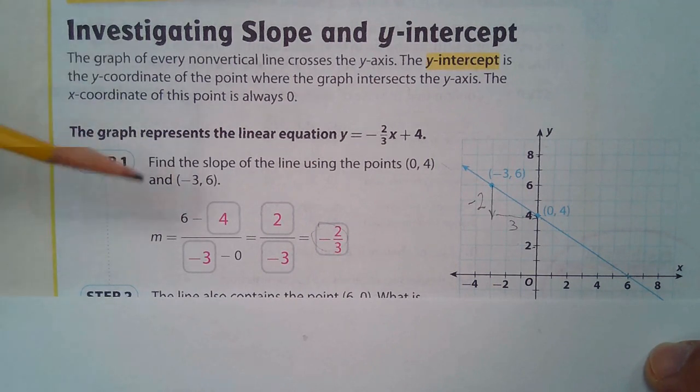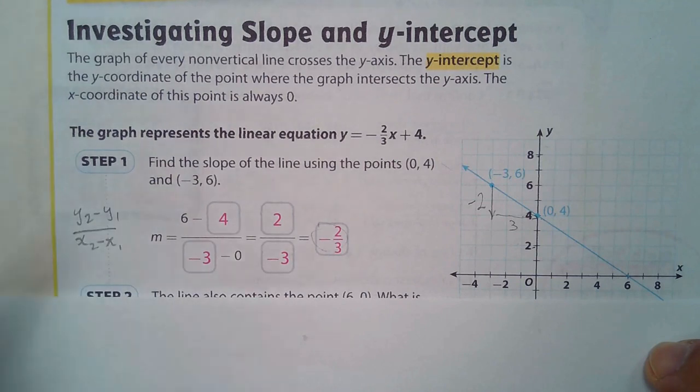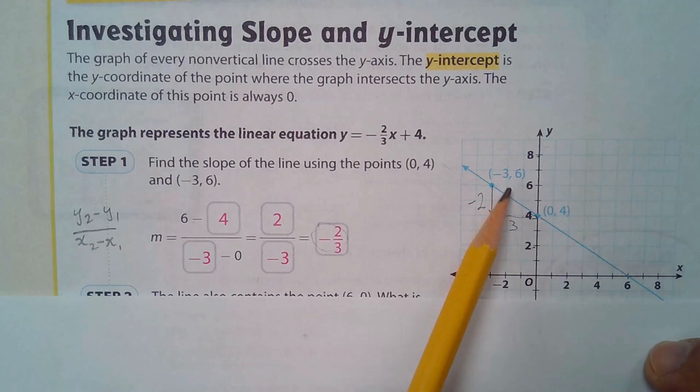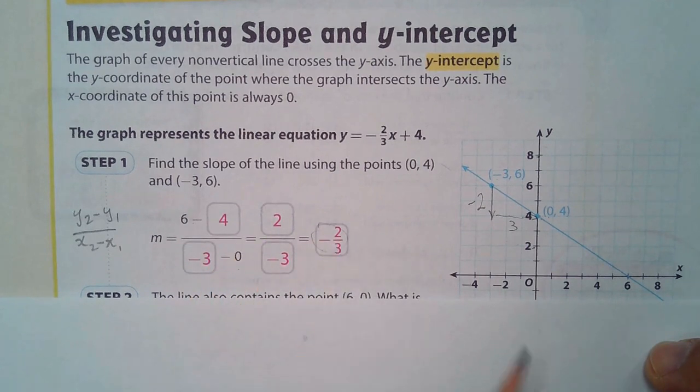But we can also see it as y sub two minus y sub one over x sub two minus x sub one. Six minus four over negative three minus zero. And when you do all this math, you end up with the same slope. So there's two different ways of getting it: looking at the graph or subtracting the y values over the x values.